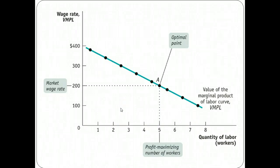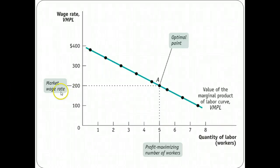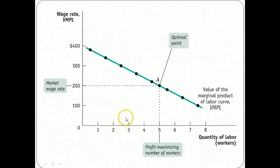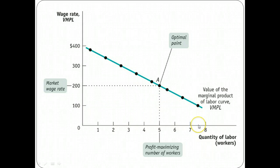Because this is a demand curve, it behaves like any other demand curve. A change in the wage rate causes a movement along the demand curve. If the wage rate rises to $300, instead of hiring five workers, I'll hire two. If the wage rate drops to $100, I'll be happy to hire seven workers.